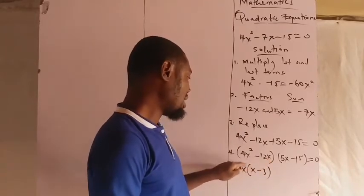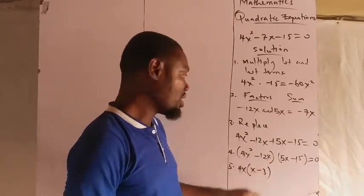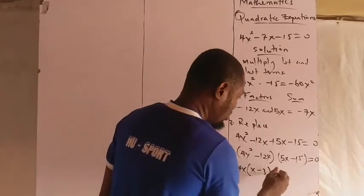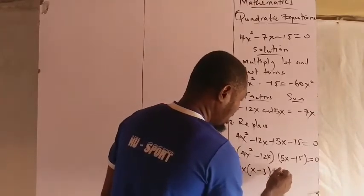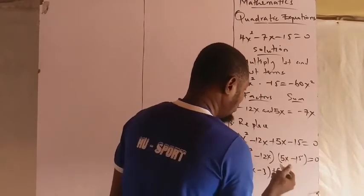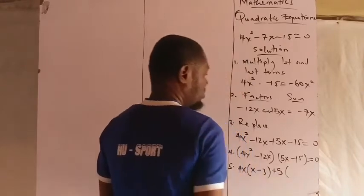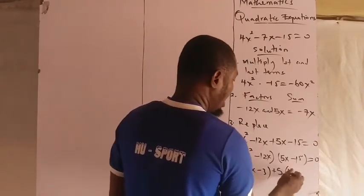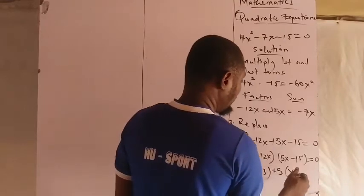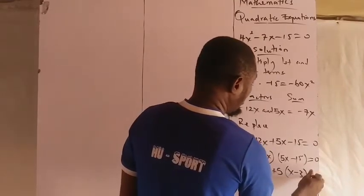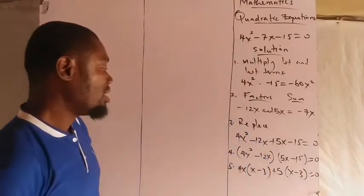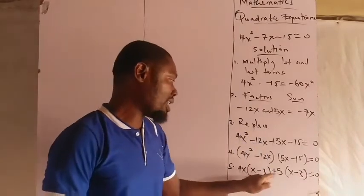In the next bracket, 5 is common. That is plus 5. Plus 5 is common. Plus 5 into that will give you x left, plus 5 into -15 is -3 = 0.